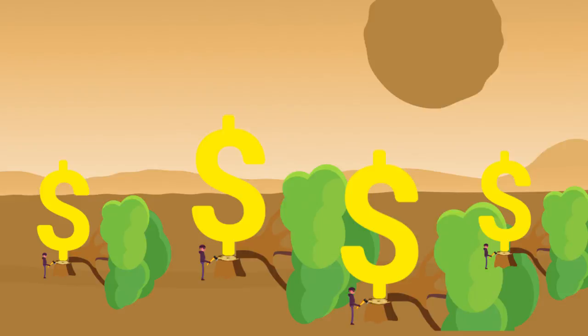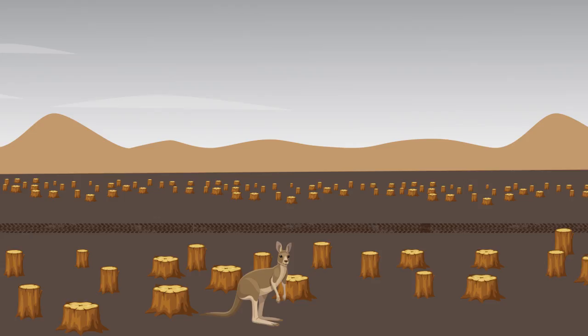Illegal logging reduces tax revenue collected by governments, often in the most vulnerable nations. And it undercuts Australia's own sustainably managed forest industry.